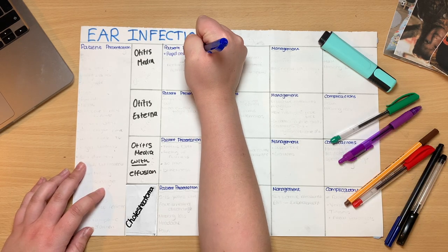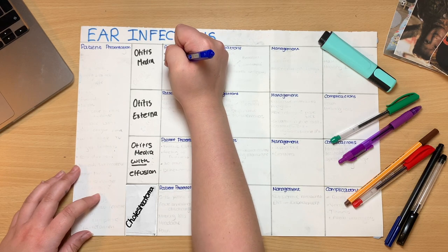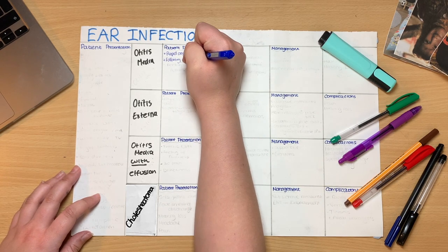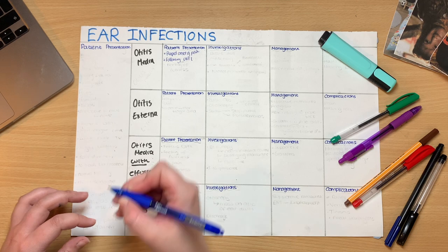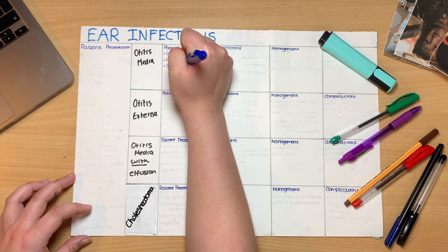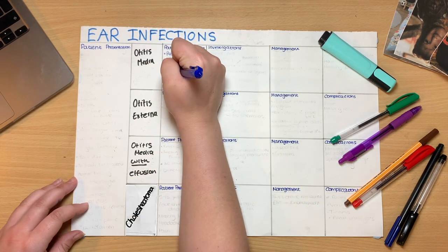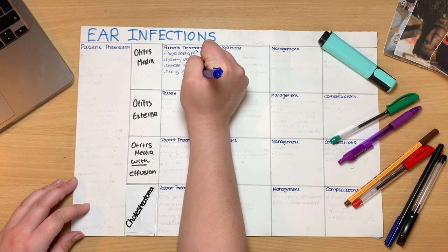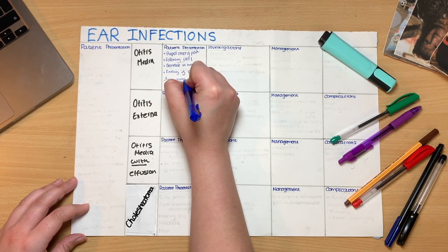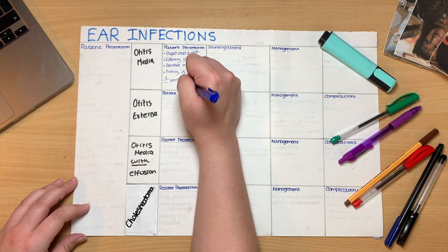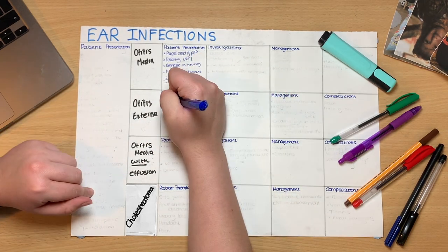First up, we have otitis media, which is an infection in the middle part of the ear where the ossicle bones are. For this presentation, I'd expect to see a rapid onset of pain, possibly following an upper respiratory tract infection. I'd want to see a decrease in hearing, a feeling of fullness, and with or without a perforated eardrum — but we'll talk about this later.